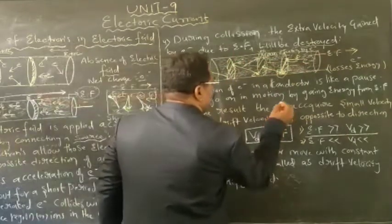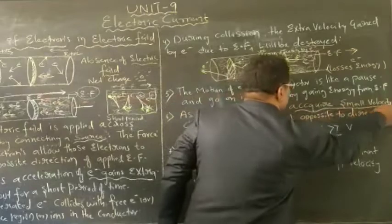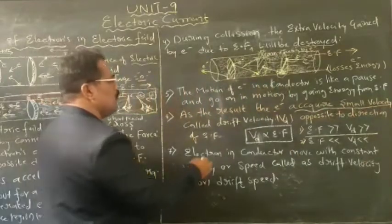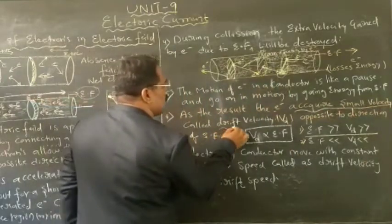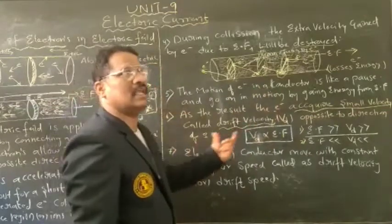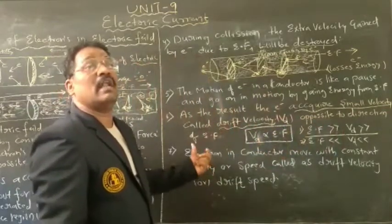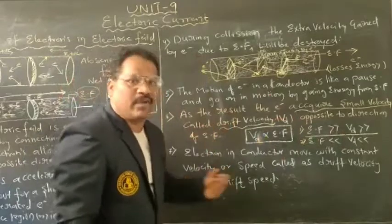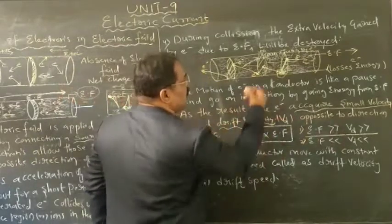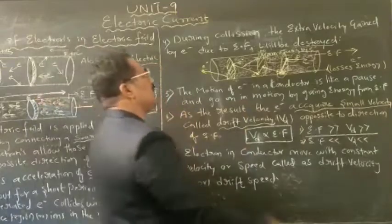As a result, the electron acquires a small velocity called drift velocity, which is exactly opposite to the direction of the electric field. This drift velocity remains constant.